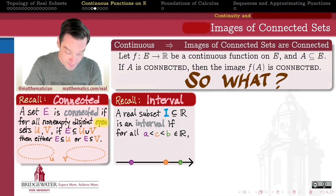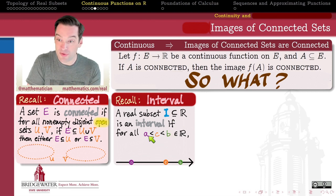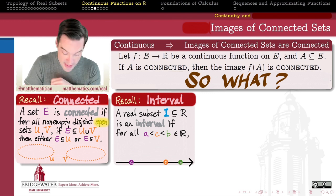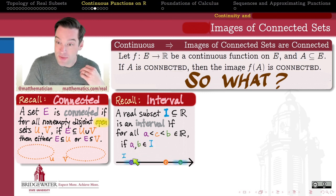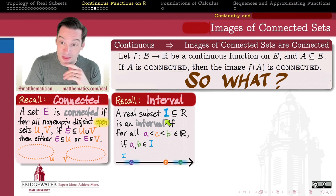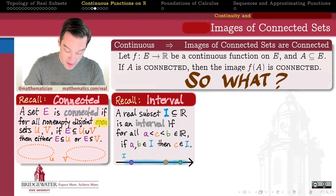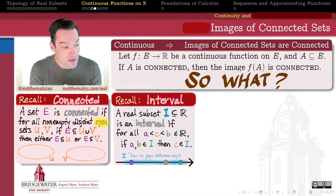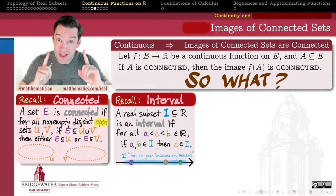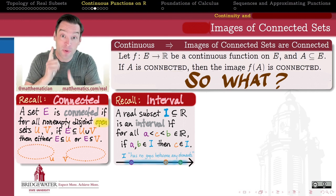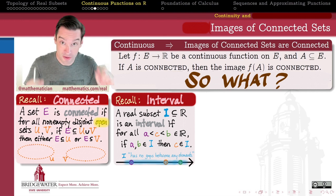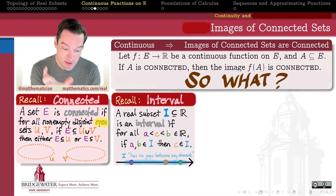An interval is a subset of the real numbers that has the property that whenever we have three real numbers a, b, and c, where c is strictly in between a and b, and if a and b happen to be members of the set I, that guarantees that c — the thing which is in between a and b — is also a member of the set I. So an interval is a subset of the real numbers that has no gaps between any of its elements.